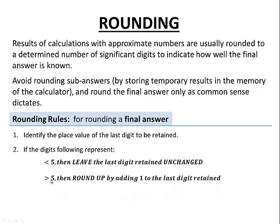If the digits following are greater than five, then we'll round up that last digit retained by adding one to it. And if they're equal to five, then we will still round up by adding one to the last digit retained.